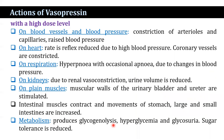At high dose levels, vasopressin acts on blood vessels and blood pressure. It causes constriction of arterioles and capillaries, thus raising blood pressure. Heart rate is reduced due to the high blood pressure. Coronary vessels are also constricted. Occasional apnea occurs due to changes in blood pressure.